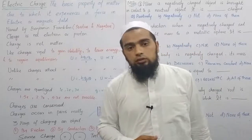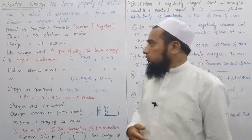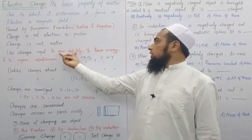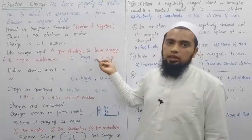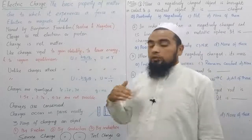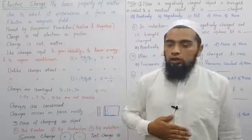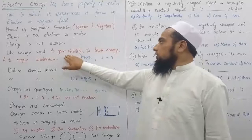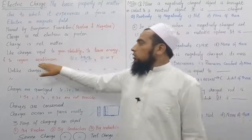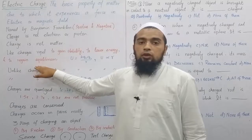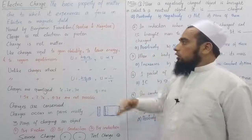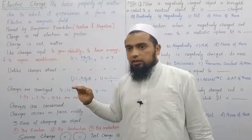When an atom loses an electron, its equilibrium is disturbed. Its stability decreases and its energy increases — it becomes active. Now, both the atom and the electron, being in active form, will move toward stability, toward reducing energy, and toward regaining equilibrium. That is why they repel each other.